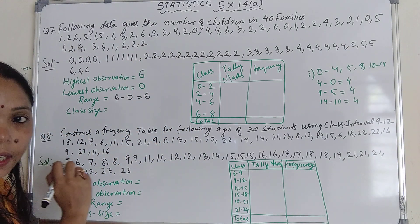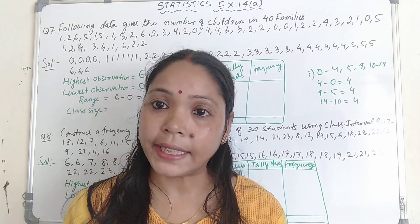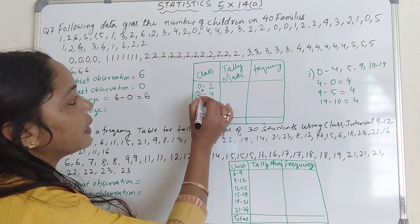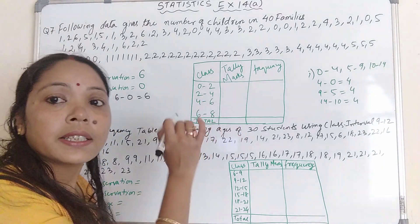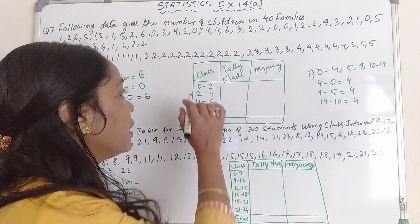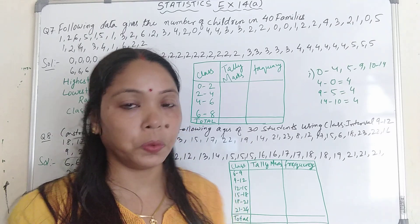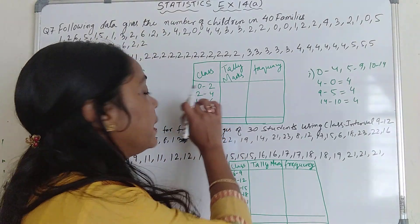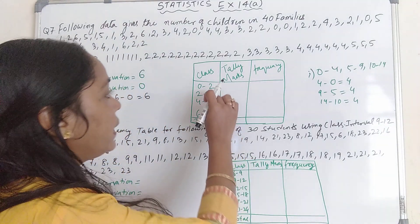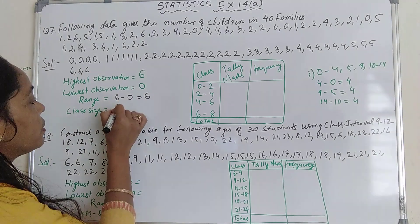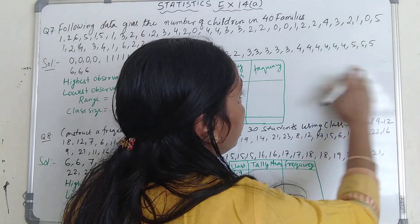Now class size — we have to find it from the class interval. Here I have selected the intervals as 0 to 2, 2 to 4, 4 to 6, and 6 to 8. For 0 to 2, the class size is 2 minus 0 equals 2. For 2 to 4, it is 4 minus 2 equals 2. So the class size here is 2.